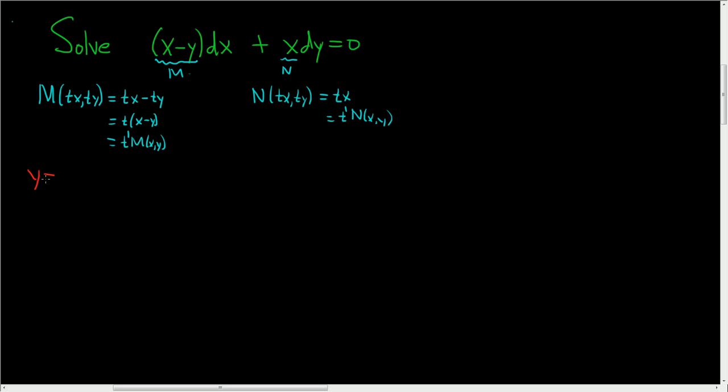So we have a homogeneous equation so we can make a substitution. We have a choice: we can use y equals ux or we can use x equals vy. If we use y equals ux then we have dy equals udx plus xdu. And if we use x equals vy then we have dx equals vdy plus ydv.